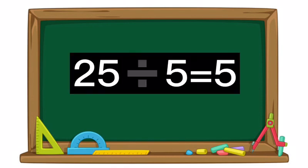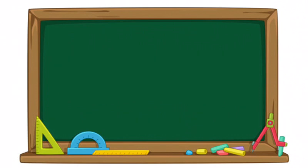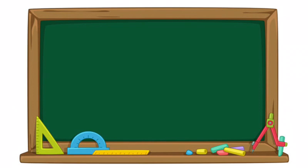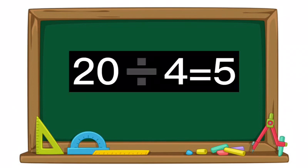Six divided by two equals three. Twenty-five divided by five equals five. Fifteen divided by five equals three.